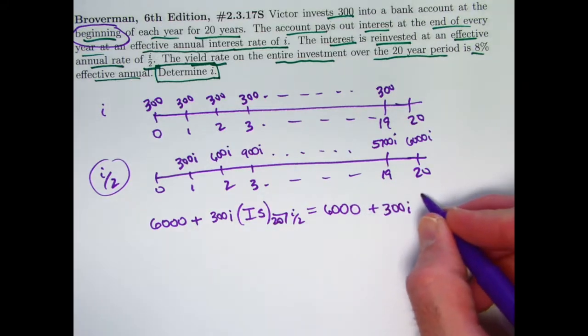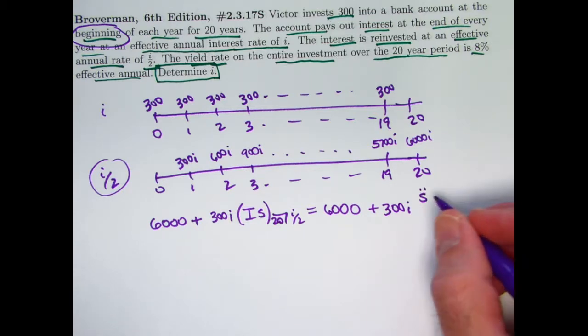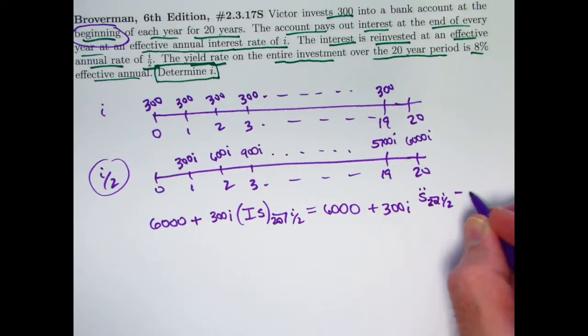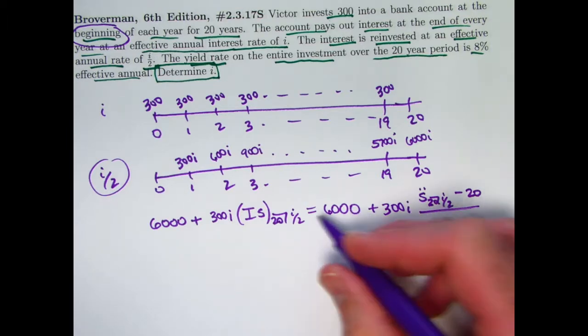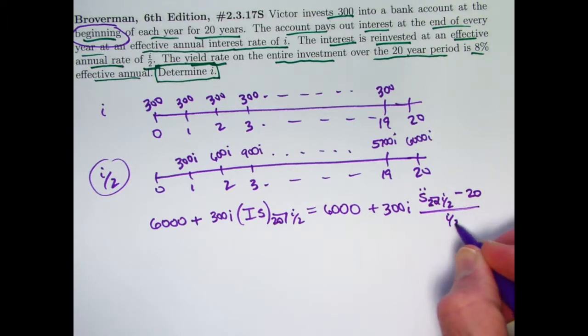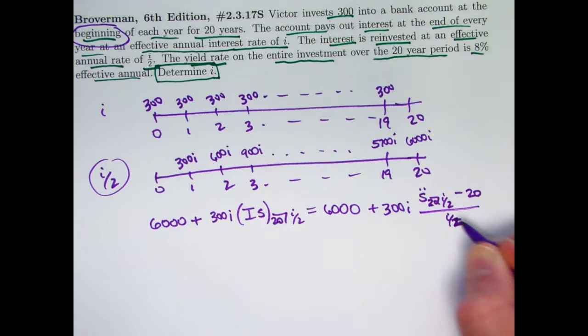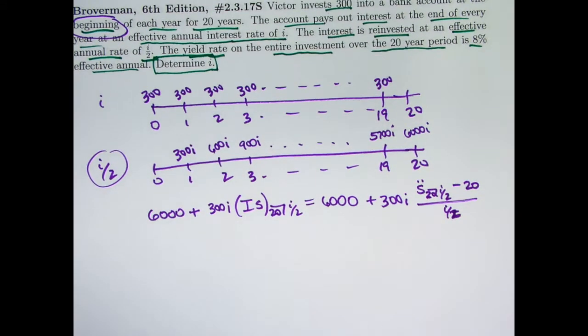Let's simplify this. What is the formula for this future value of an increasing annuity immediate? Hopefully you recall, it's a little funny. It's actually the future value of an annuity due with that same interest rate, i over 2, minus n, the number of payments, which is 20, all divided by the interest rate for that account, which is i over 2. It's a little funny. Yeah, that's right. That's an annuity due there.